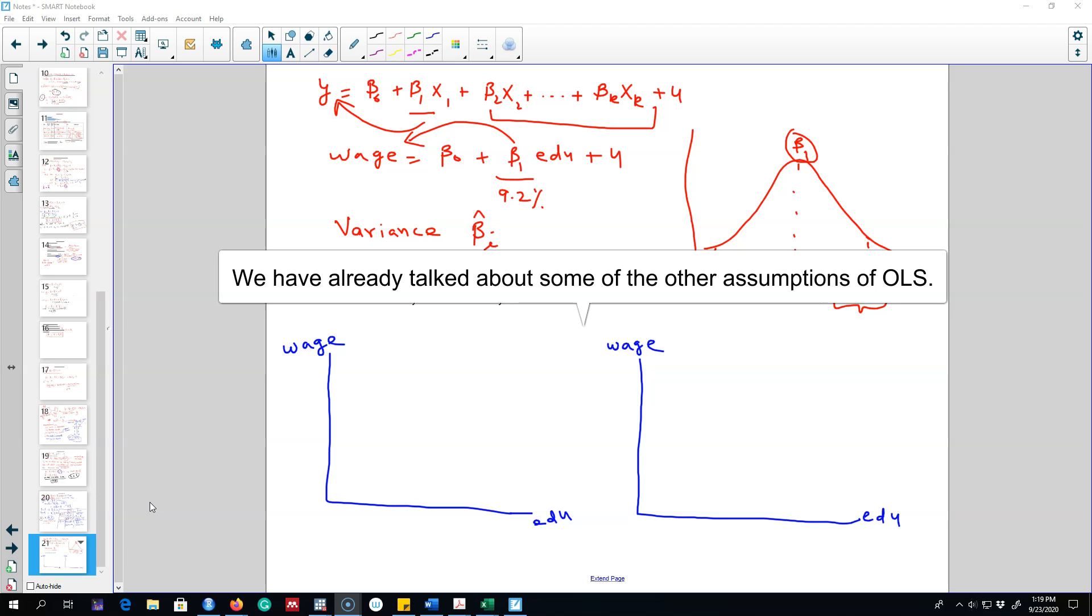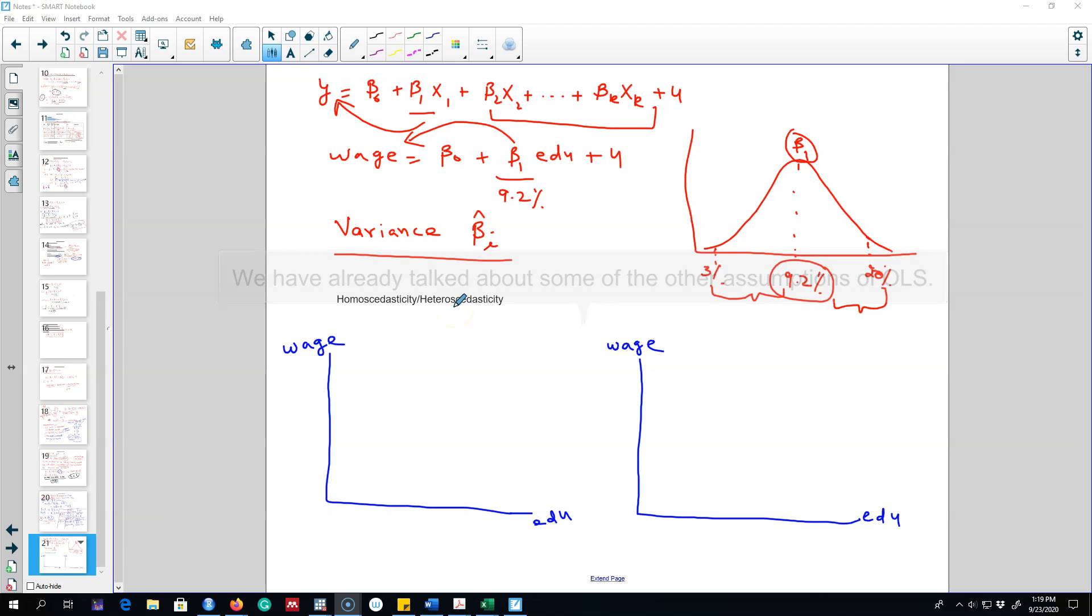In fact, we want our model to be homoscedastic. By homoscedasticity I mean that the variance of the error term ui given education of an ith person is a constant number.